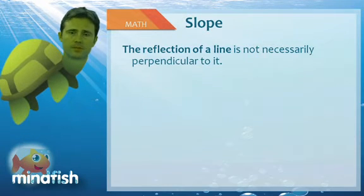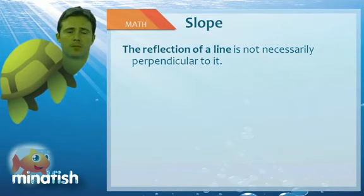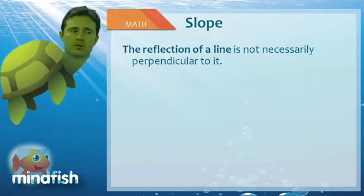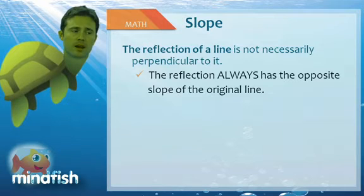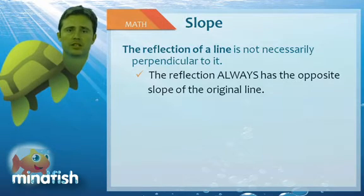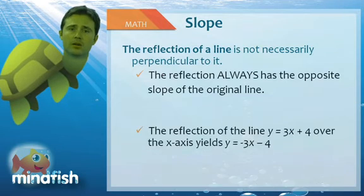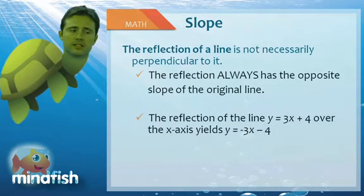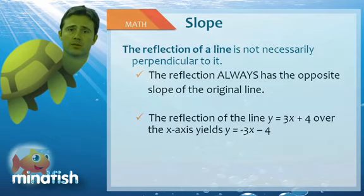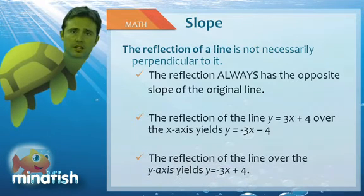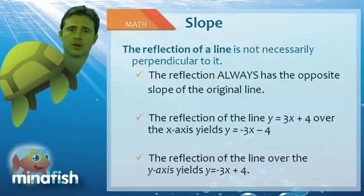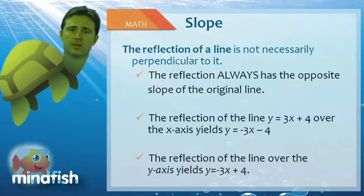Reflections are not necessarily perpendicular. So when you draw the reflection, it may look perpendicular, but keep in mind it isn't always. Reflections are always the opposite of the original slope, regardless of whether you reflect over the X or the Y axis. Now if you reflect over the X axis, it will in fact change the intercept and make it negative. So if we reflect the line Y equals 3X plus 4 over the X axis, we'll get the equation Y equals negative 3X minus 4. Good idea to go ahead and draw this and see that when you reflect over the X axis, that intercept does become negative. The reflection over the Y axis, on the other hand, doesn't negate the intercept. So while the slope is indeed negative, negative 3, the intercept here would be 4.